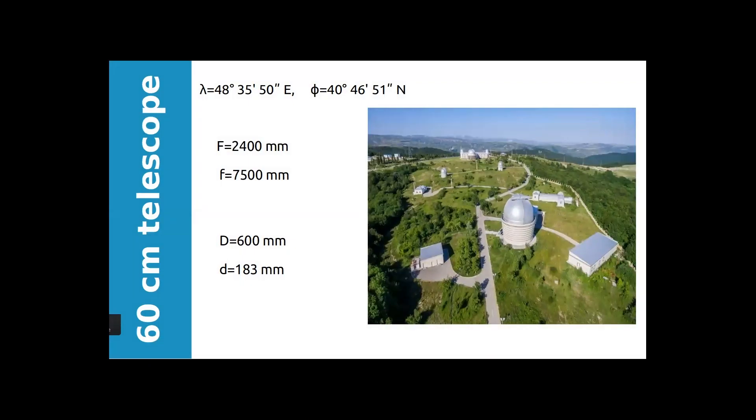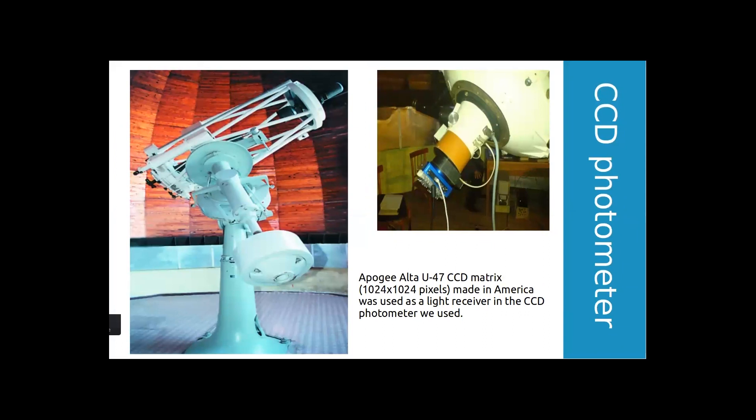Here you see Shamakha Astrophysical Observatory, named after Nasreddin Tusi, established in 1959 at 1500 meters above sea level. We have six telescopes: four stellar and two solar. The 60-centimeter telescope is one of the main telescopes, used for photometric observation. This telescope was produced by German Carl Zeiss company and installed in Azerbaijan in 1978. The optical system is classic Cassegrain. Here you see the telescope and CCD photometer joined to it.